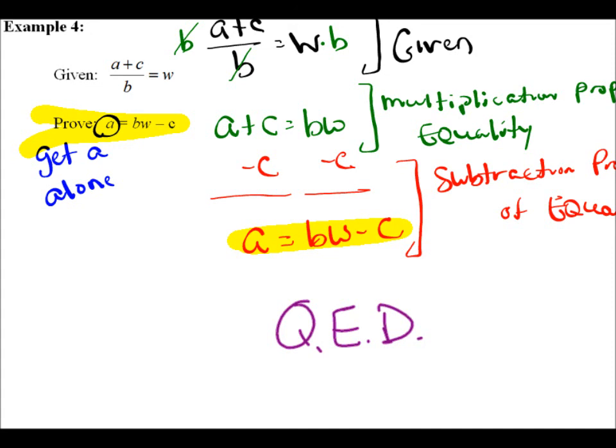That's how you use the properties of real numbers to explain your algebra in a proof-like method. A proof is really nothing more than showing all of your work and explaining why you did each step. In middle school you'd say 'I subtracted 3 from both sides' — now we're just giving it the mathematical name: the subtraction property of equality, the division property of equality. That's everything you need to know about the basics of properties of equality and basic proof-writing.